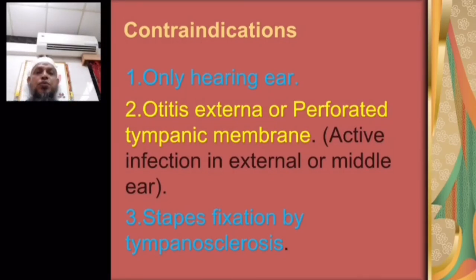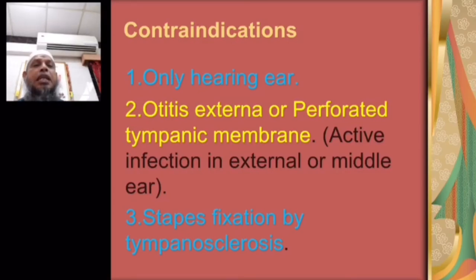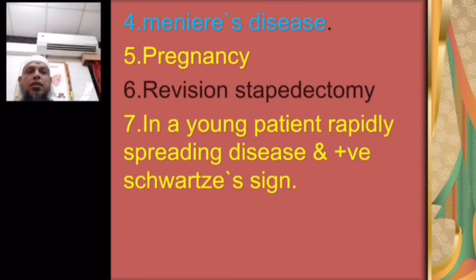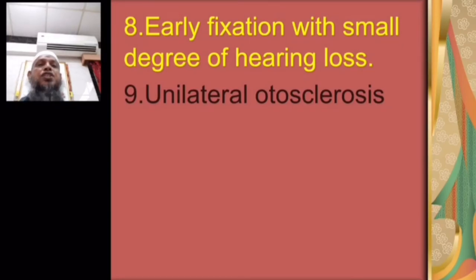Contraindications to stapedectomy: number one — only hearing ear. Number two — otitis externa or perforated tympanic membrane (active infection in external or middle ear). Number three — stapes fixation by tympanosclerosis. Number four — Meniere's disease. Number five — pregnancy. Number six — revision stapedectomy. Number seven — young patient with rapidly spreading disease and positive Schwartz sign. Number eight — early fixation with small degree of hearing loss. Number nine — unilateral otosclerosis.